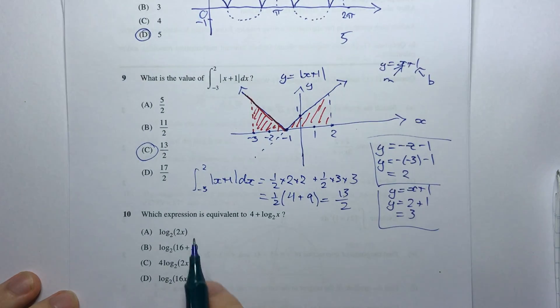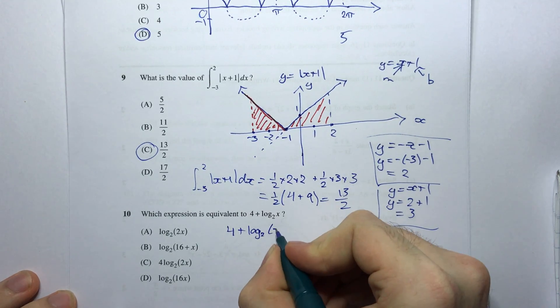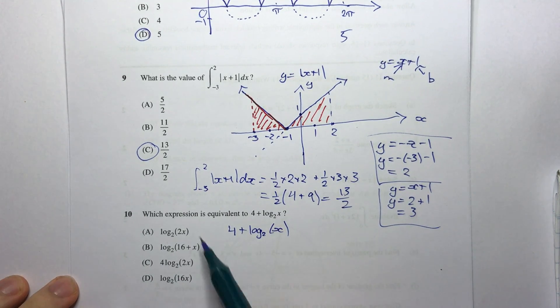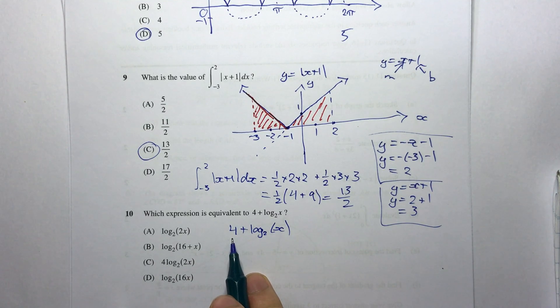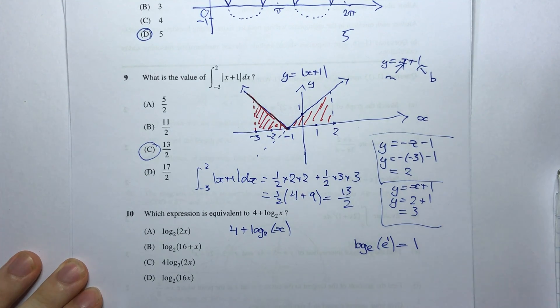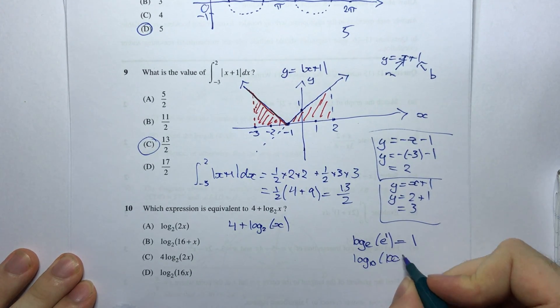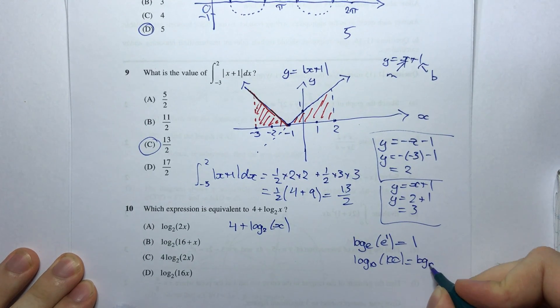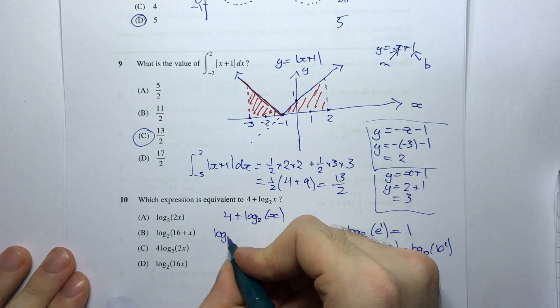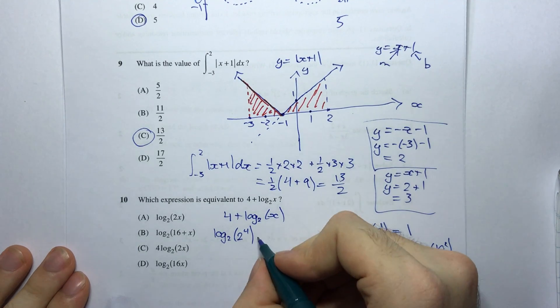And the final part, which expression is equivalent to 4 plus log in base 2 of x. Now, clearly, I need to write 4 in terms of some log in base 2. And the reason I want to do that is because then I can use my log laws and combine them together to get something, hopefully one of these four options. Now, how can I write 4 in terms of log in base 2? Well, if you think about log in base e of e, now we know that's 1, but it's 1 because it's e to the power 1. In the same way, I have log in base 10 of 100. So that's going to be log in base 10 of 10 squared, because 100 is 10 squared. And we know that that's 2, because what does this thing really do? It just tells me what this exponent is going to be. So here I have to write log in base 2 of 2 to the 4 plus log in base 2 of x.